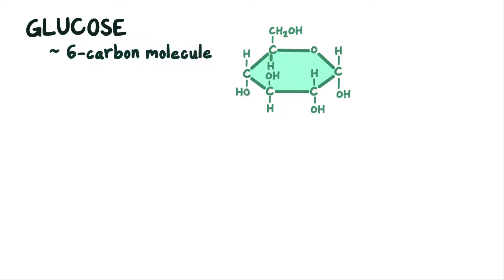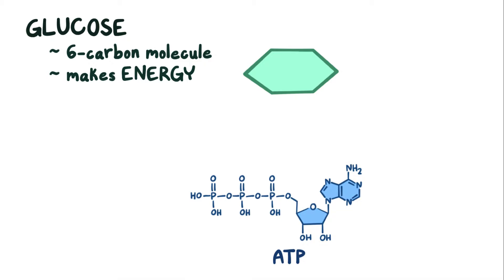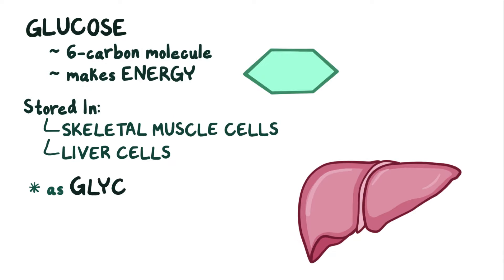Glucose is a 6-carbon molecule that's used to make energy in the form of adenosine triphosphate, or ATP. Glucose is such an important energy source that our body stores excess glucose in skeletal muscle cells and liver cells in the form of glycogen.